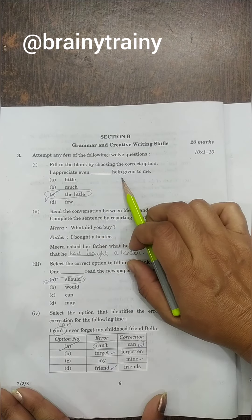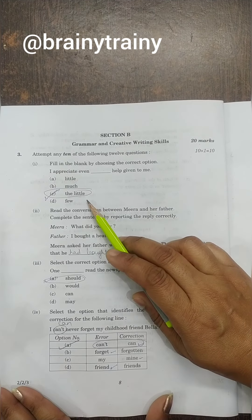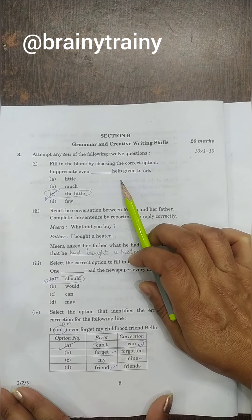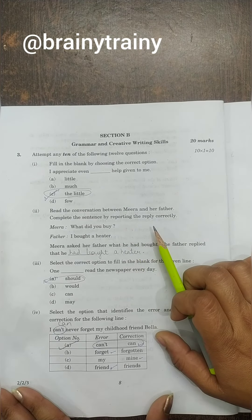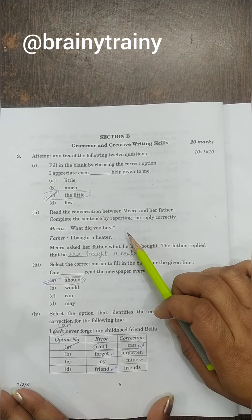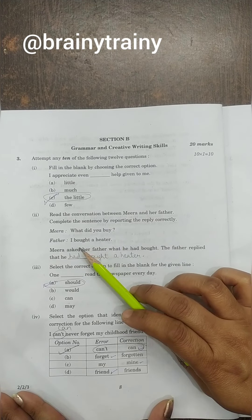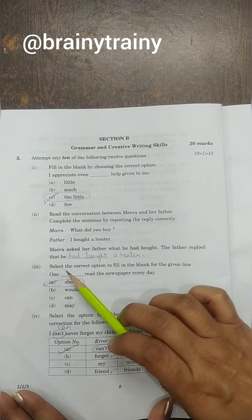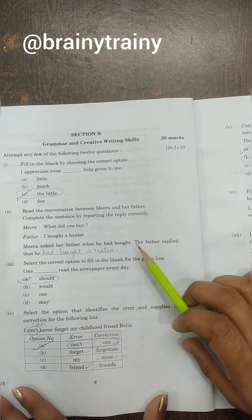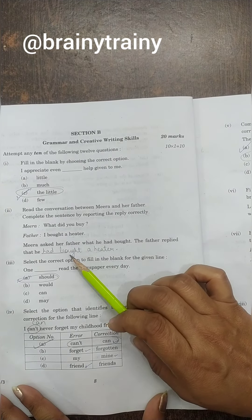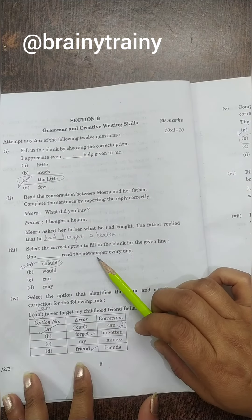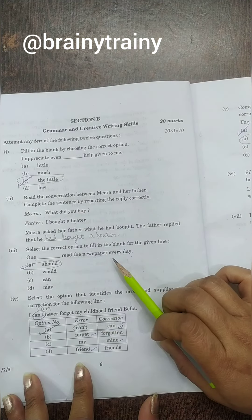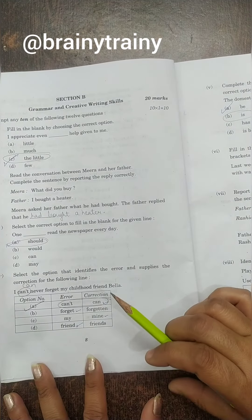First question: I appreciate even dash help given to me. So this answer is 'the little'. I appreciate even the little help given to me. Question number 2: Read the conversation between Meera and her father, complete the sentence. Meera: What did you buy? Father: I bought a heater. Meera asked her father what he had bought. The father replied that he had bought a heater. Third question: One dash read the newspaper every day. So this answer is 'should'. One should read the newspaper every day.